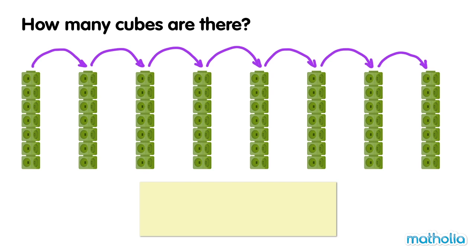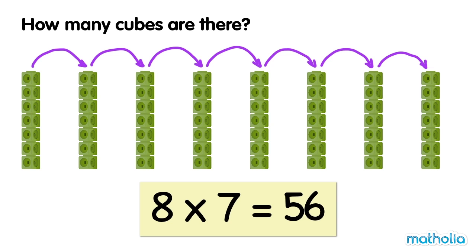Eight sevens are fifty-six. Eight times seven equals fifty-six.